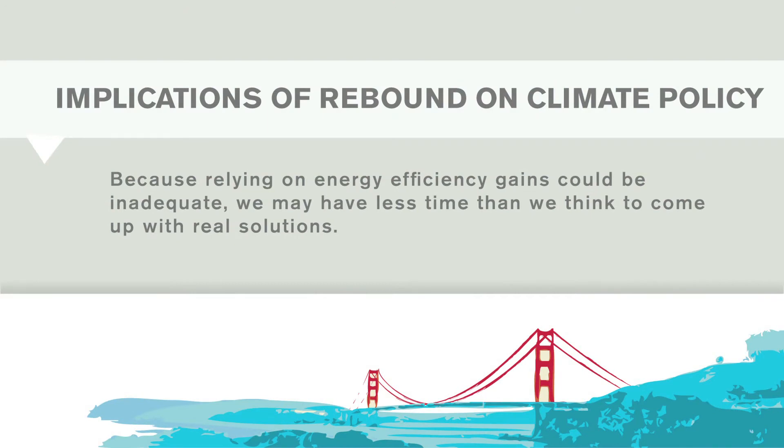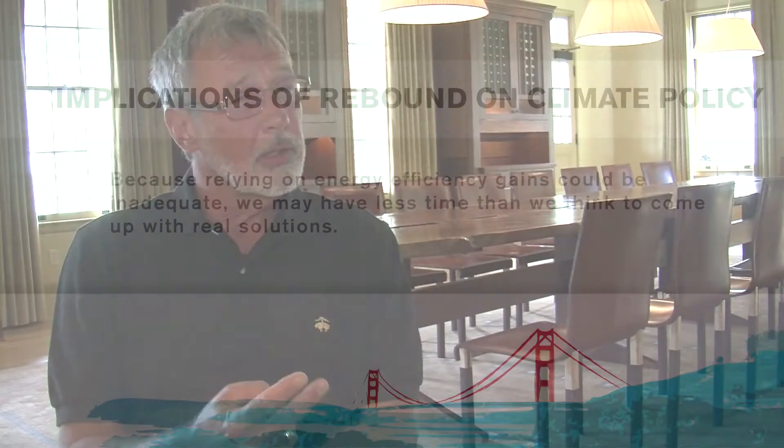The implications for climate change policy of rebound are basically two. First, if you look at the Kyoto Protocols and international agreements where countries are committing to certain emissions levels — to the extent that they're counting on energy efficiency to get them most of that way — they stand the chance of falling far short.